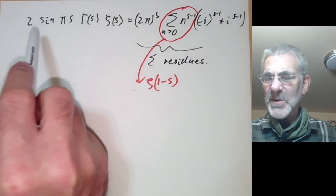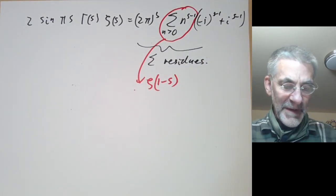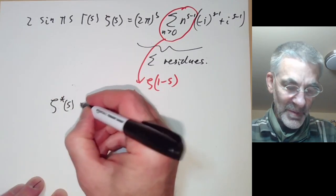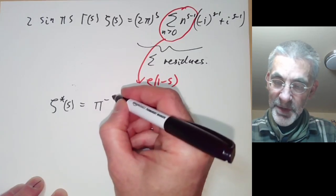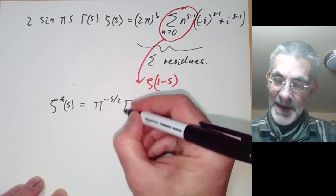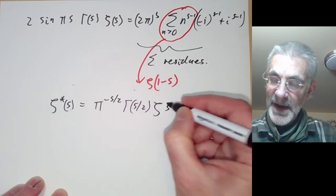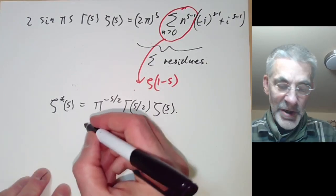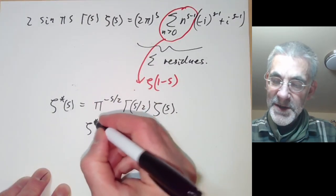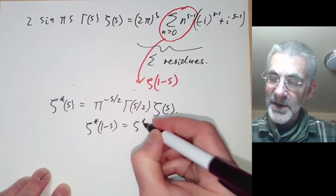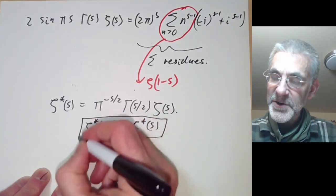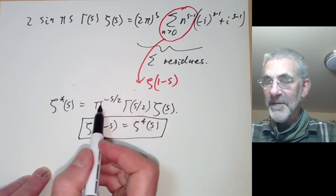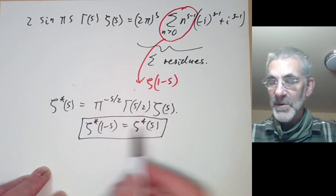One obvious problem with this formula is that it's a bit of a mess. Riemann found a neat way of simplifying it: define zeta star of s as pi to the minus s over 2 times gamma(s over 2) times zeta(s). Using properties of the gamma function, the functional equation becomes simply zeta star(1 minus s) equals zeta star(s). This is the clean version of the functional equation for the Riemann zeta function, and the extra factors make it much better behaved.